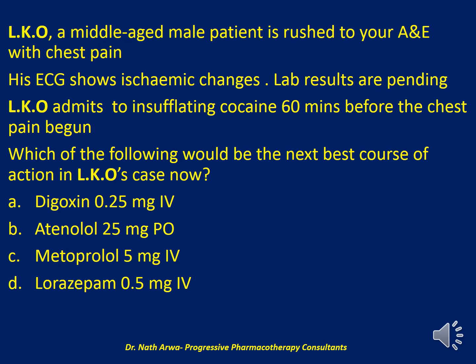The next question reads: Mr. LKO, a middle-aged male patient, is rushed to your accident and emergency department with chest pain. His EKG shows ischemic changes and his lab results are pending. Mr. LKO admits to insufflating cocaine 60 minutes before the chest pain ensued. Which of the following would be the next best course of action? Would you administer digoxin 0.25 mg IV, atenolol 25 mg orally, or lorazepam 0.5 mg IV? I'll give you 10 seconds.